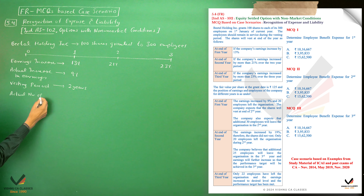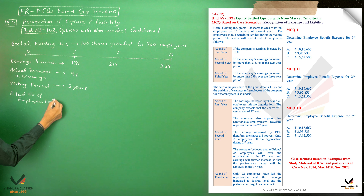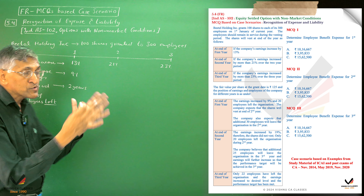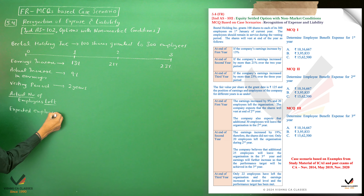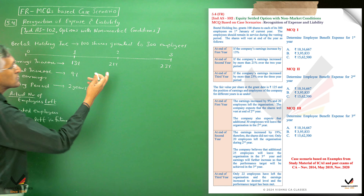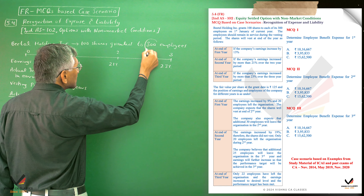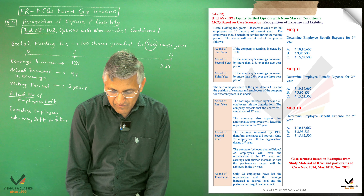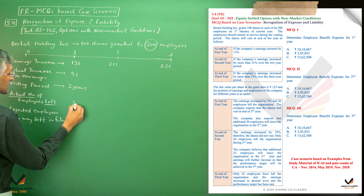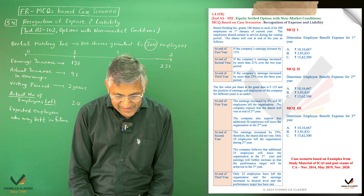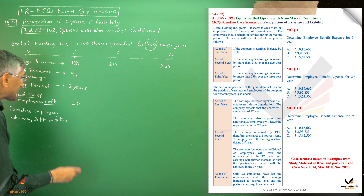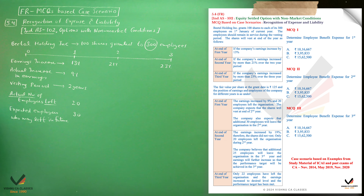Now we calculate the expected number of employees. We need the actual number who have left and the expected future leavers. In Year 1, 20 employees left the organization and we expect shares to vest in Year 2. The company expects an additional 30 employees will leave. So expected employees remaining at the end of Year 1: 300 minus 20 minus 30 equals 250.